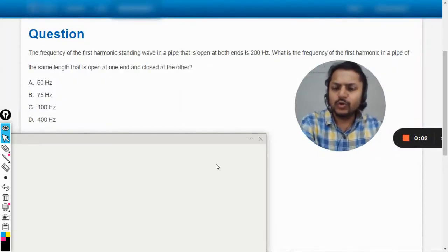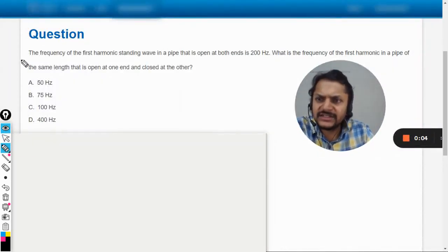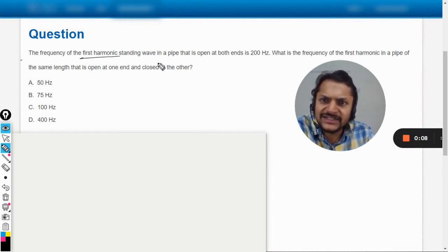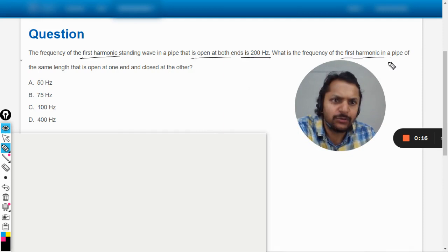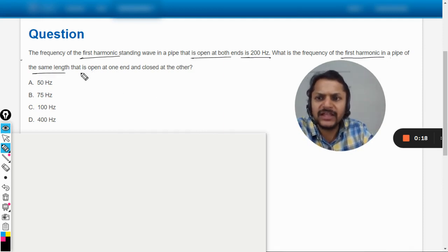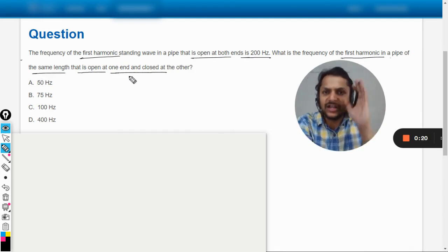Okay dear students, let us do this question and see what is there. The frequency of the first harmonic standing wave in a pipe that is open at both ends is 200 Hertz. What is the frequency of the first harmonic in a pipe of the same length that is open at one end and closed at the other?